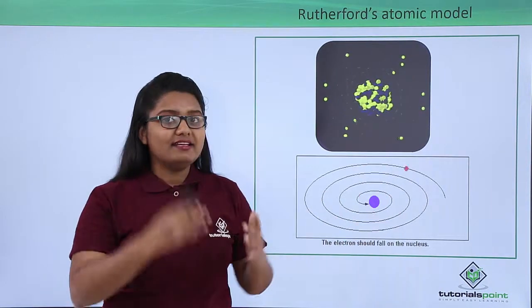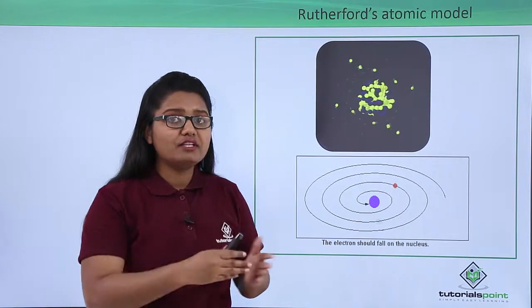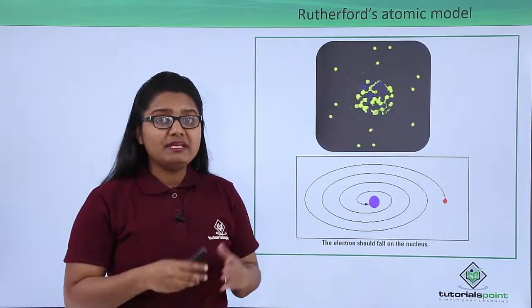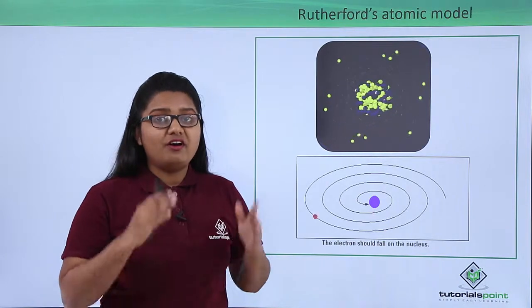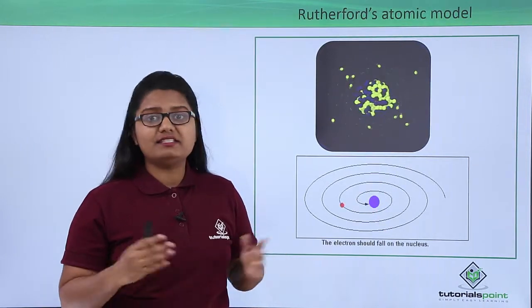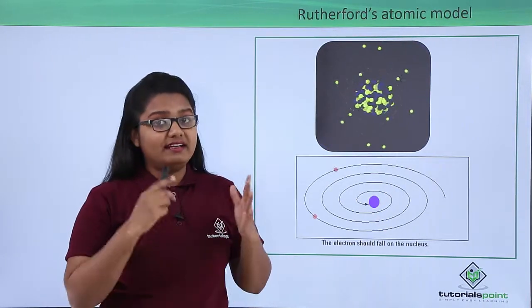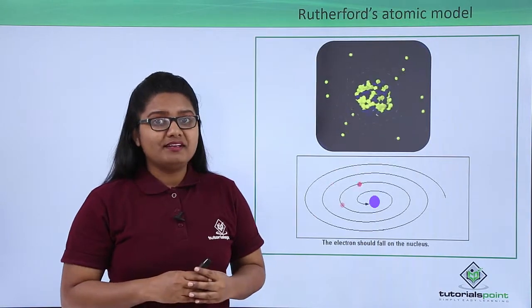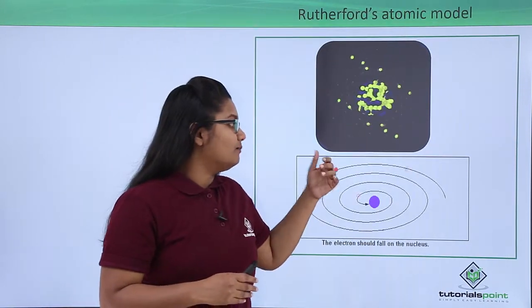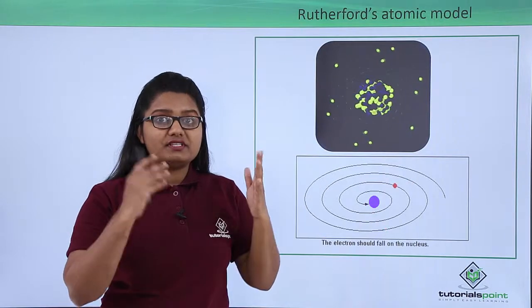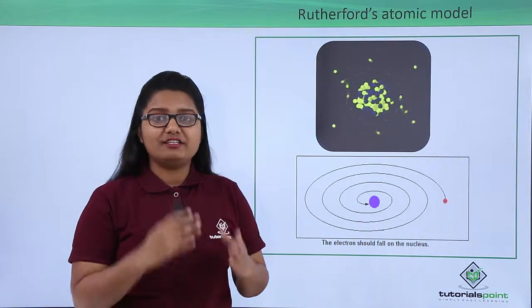This led to the shortening of the orbit of the electron, and hence eventually the electron falls onto the nucleus, which means that an atom must collapse or is highly unstable. But we know that an atom is quite stable. So this was a problem with this model which was addressed by Niels Bohr in his atomic model.